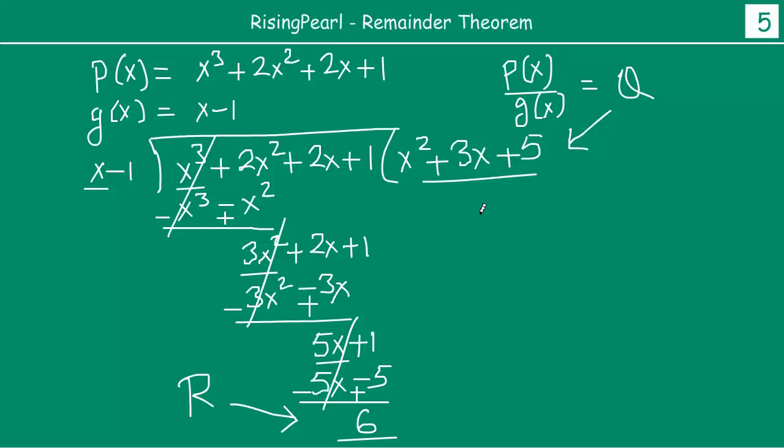Now let us apply our remainder theorem which says once you divide, the remainder should be basically p(1). So let us find out the value of p(1). We have p(x). So p(1) basically is nothing but 1³ plus 2(1)² plus 2(1) plus 1. So in this case, 1³ is 1, 1² is 1 times 2 is 2, plus 2 ones are 2, plus 1. So 1 plus 2 is 3, plus 2 is 5, plus 1 is 6. So indeed, simply by following the remainder theorem, we could have found out the remainder is 6.